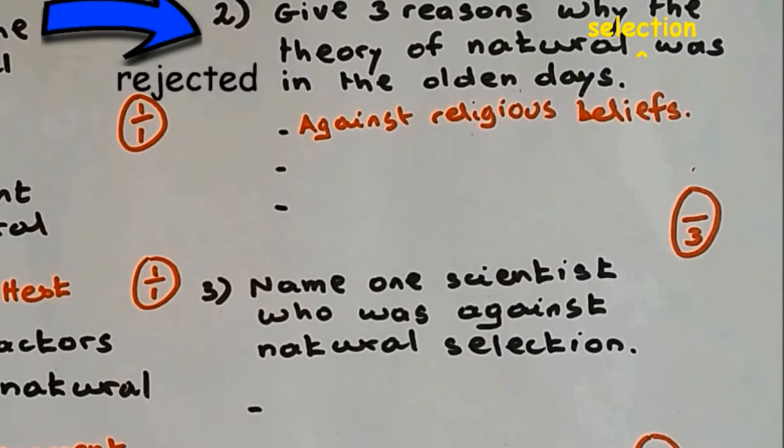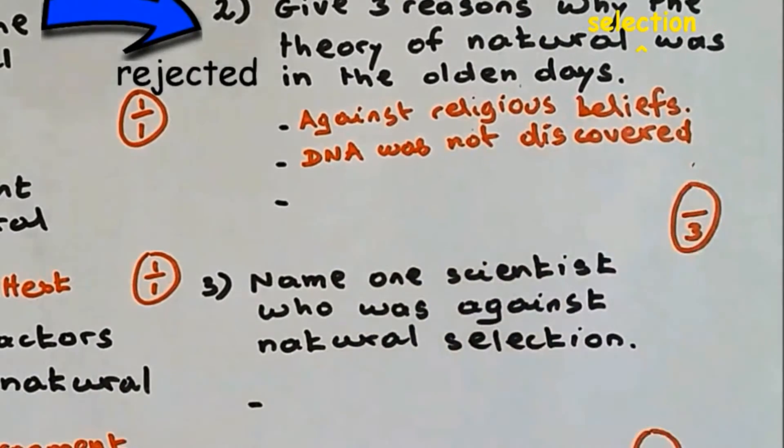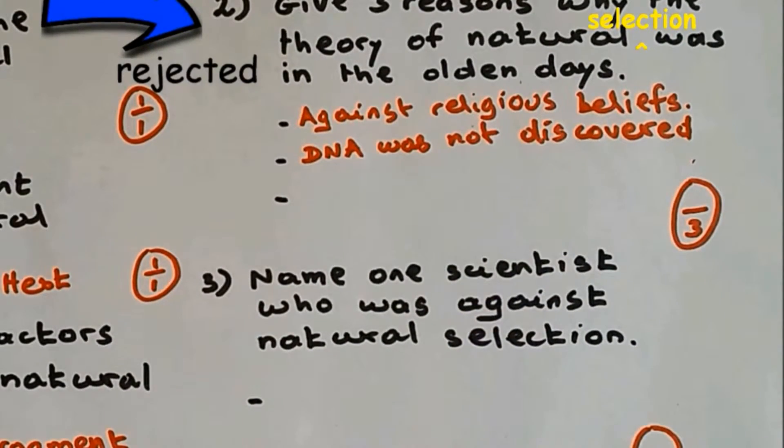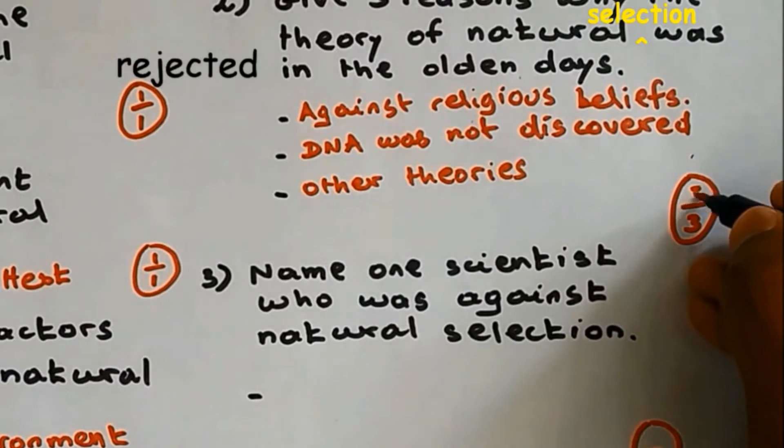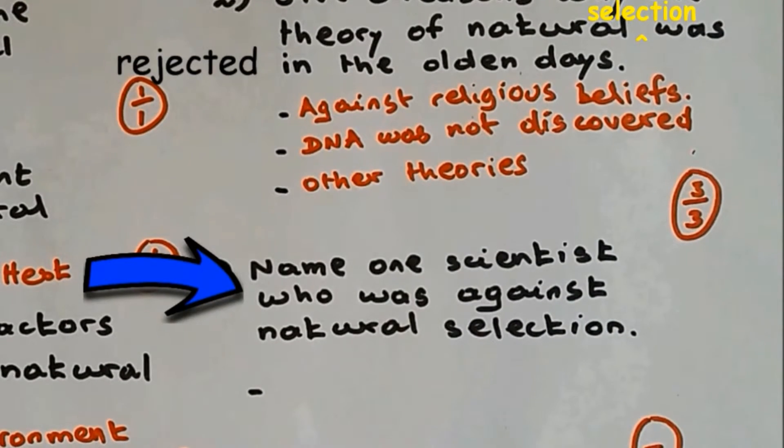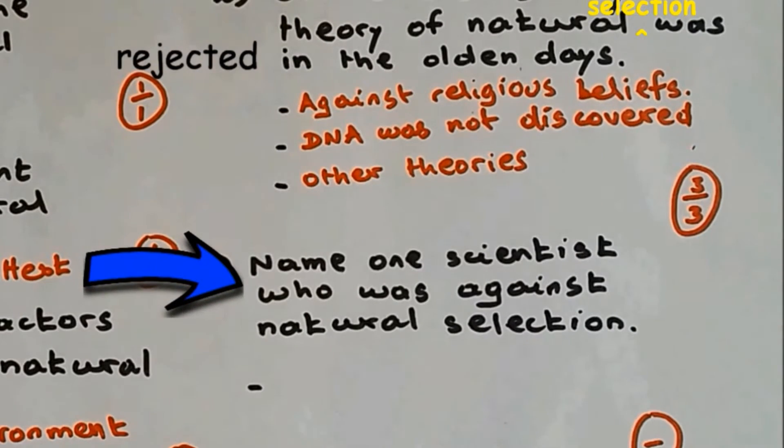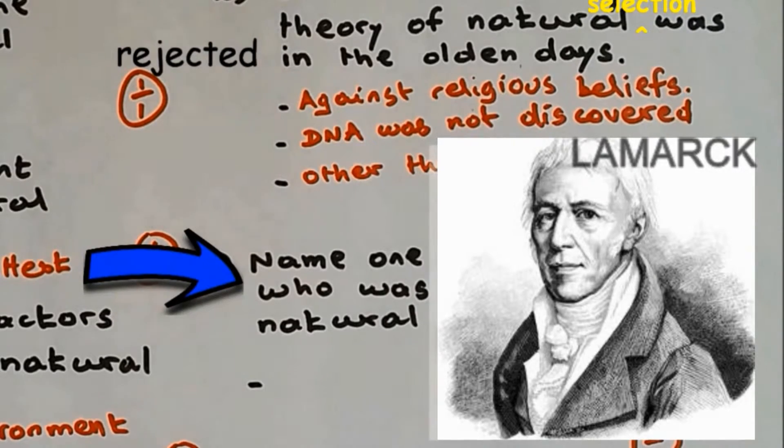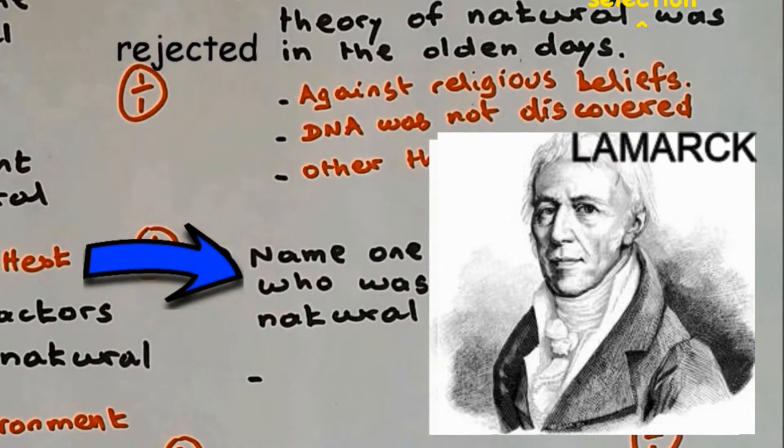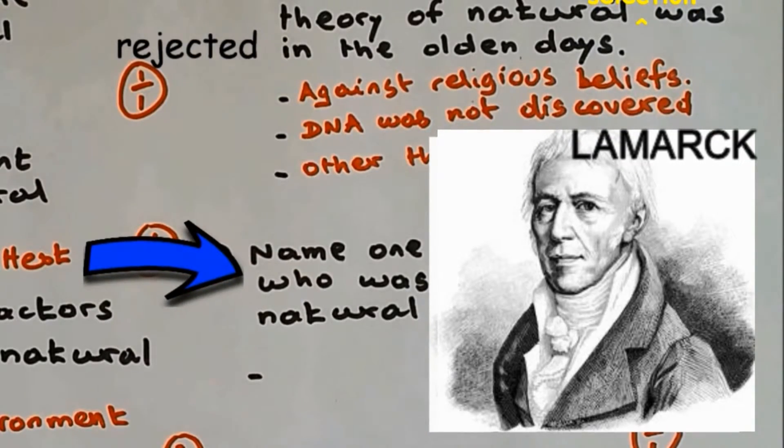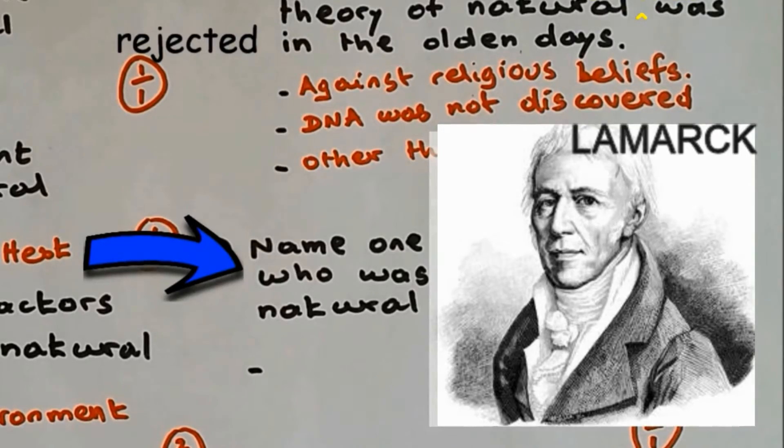Name one scientist who was against natural selection. One of the theories which were accepted in the olden days was from Lamarck, and his theory was highly accepted more than Charles Darwin's theory. But as time passed and when DNA was discovered, Charles Darwin's theory was highly accepted compared to Lamarck. So the answer for question number three is Lamarck.